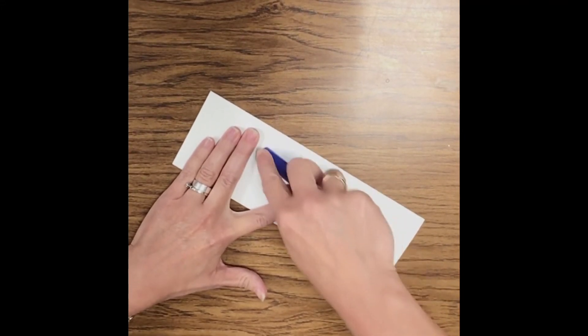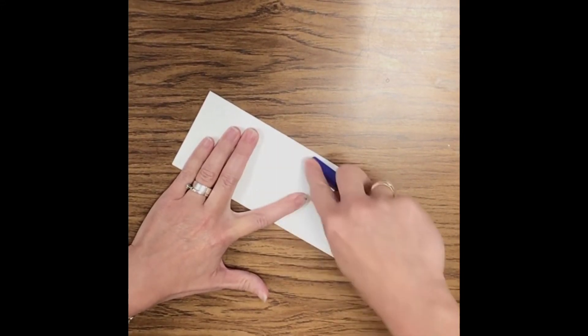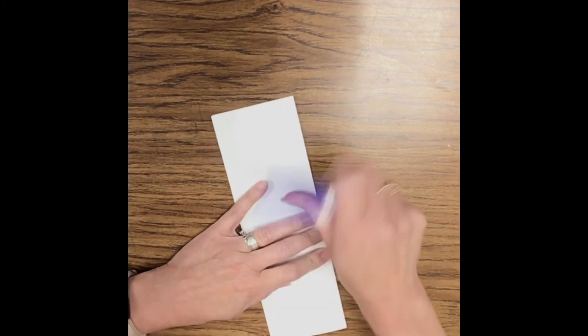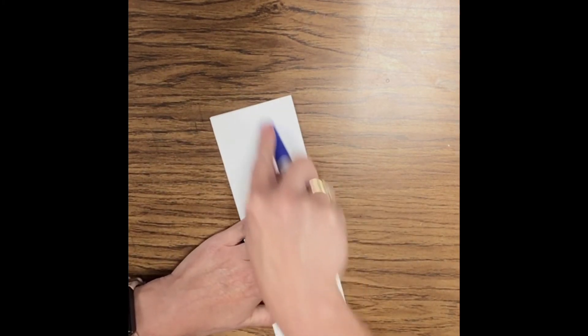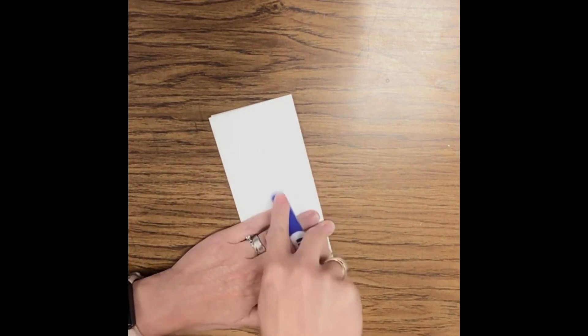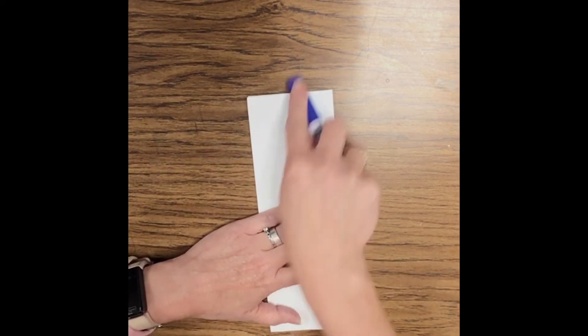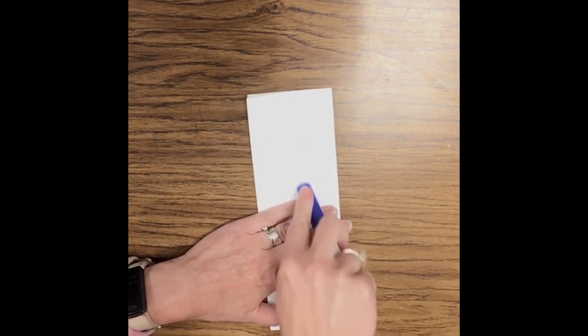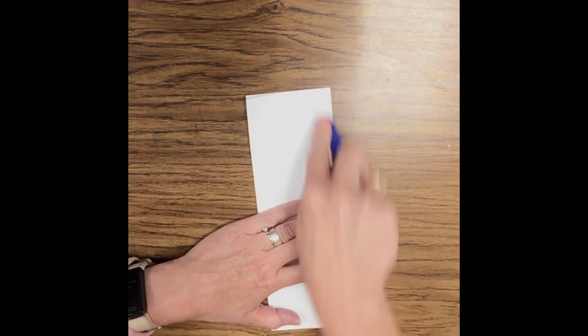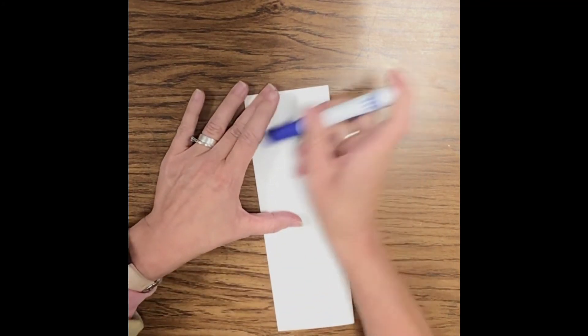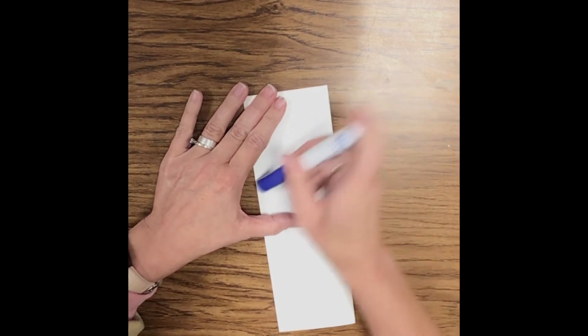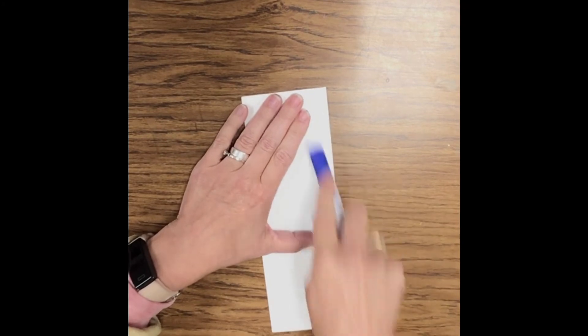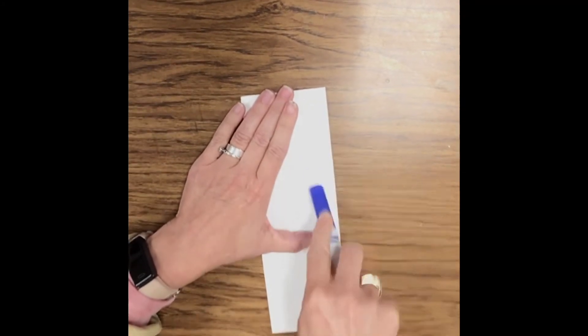And I've used some different things to do this. You could use the handle part of some scissors or if you're at home you could probably use like an edge of a spoon or something. Kind of fun to just kind of try different things and see which one does it better. So I'm gonna rub for a little bit and then we're gonna open it up and see kind of what we've got.